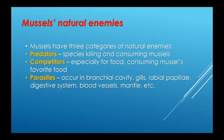Mussels have three categories of natural enemies. Predators are species that kill and consume mussels. Competitors — especially for food — consume the mussel's favourite food. And parasites occurring in the branchial cavity, gills, labial papillae, digestive system, blood vessels, mantle, etc.